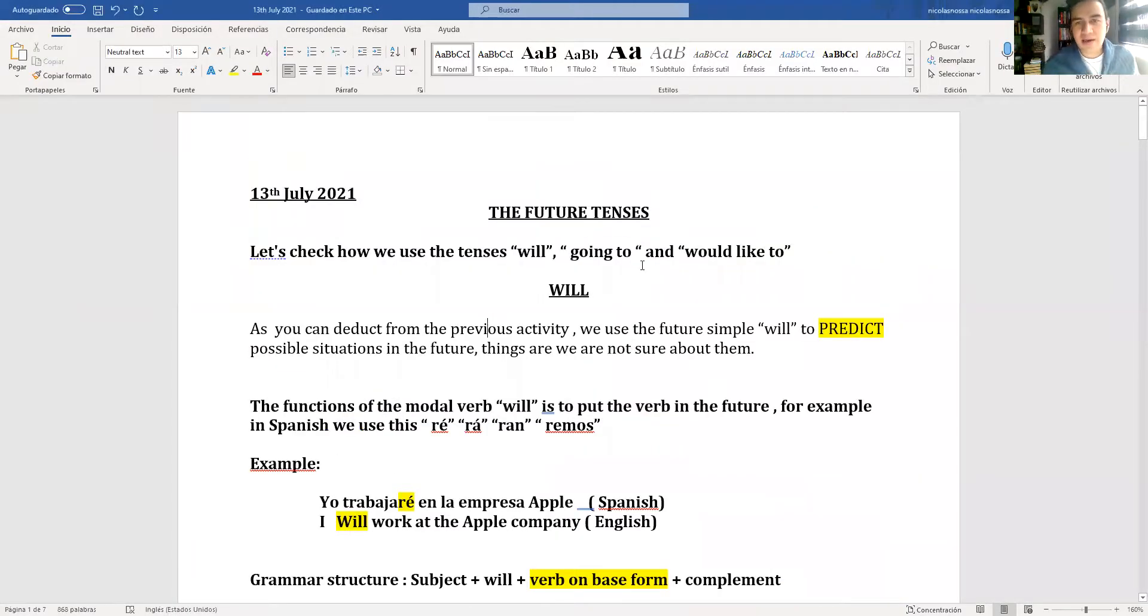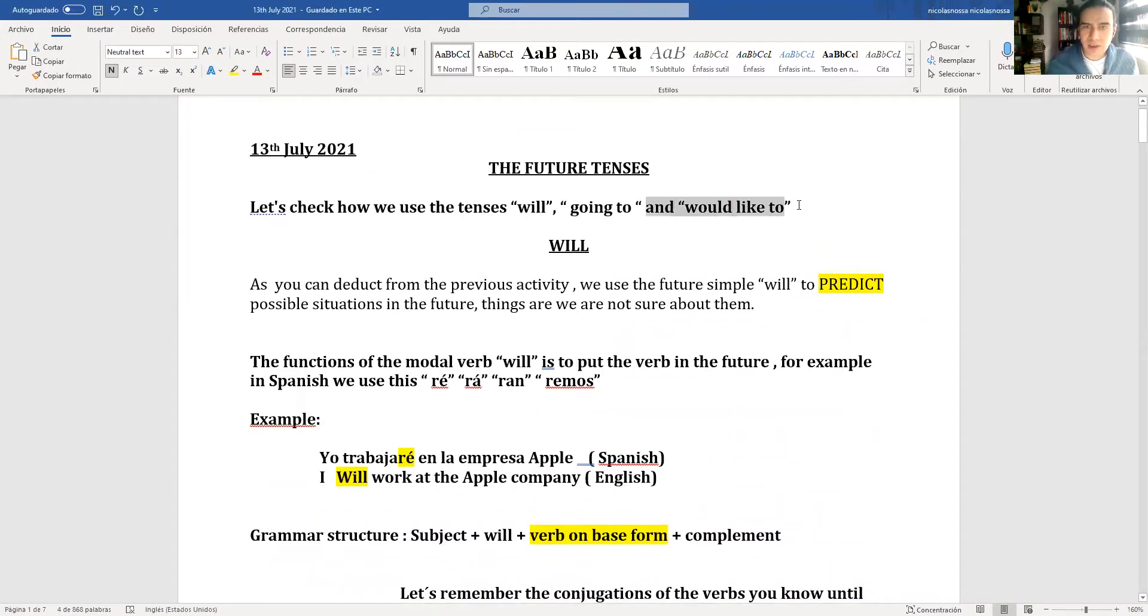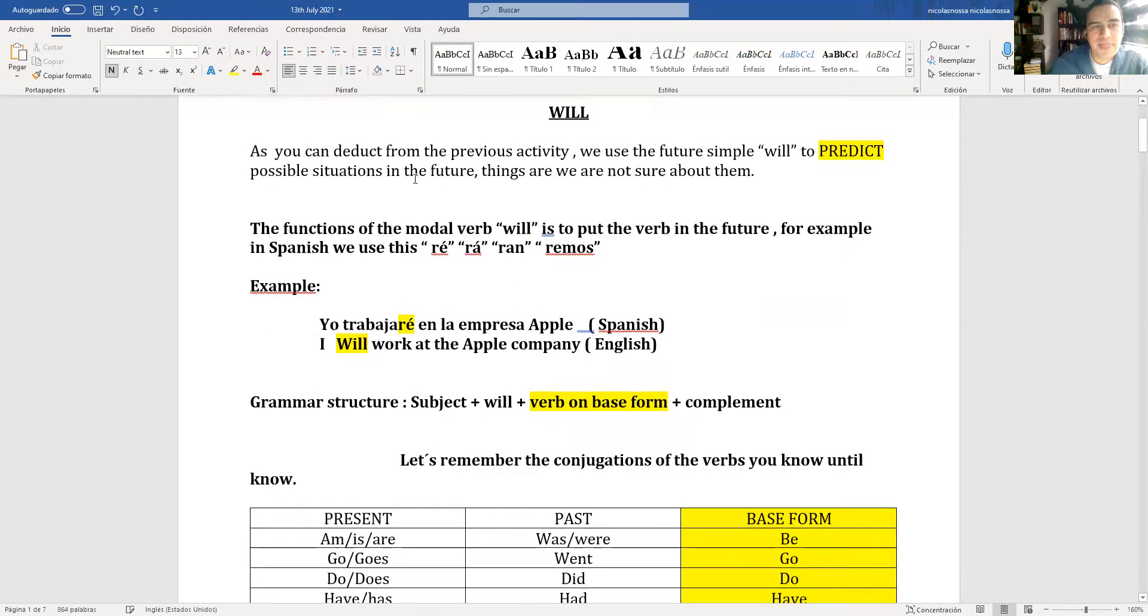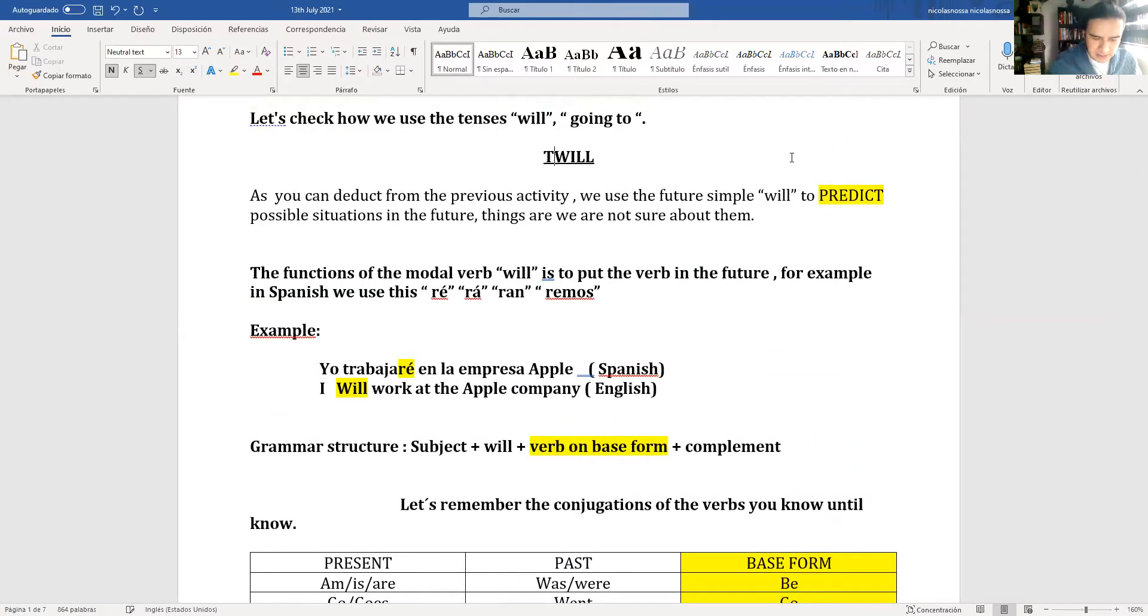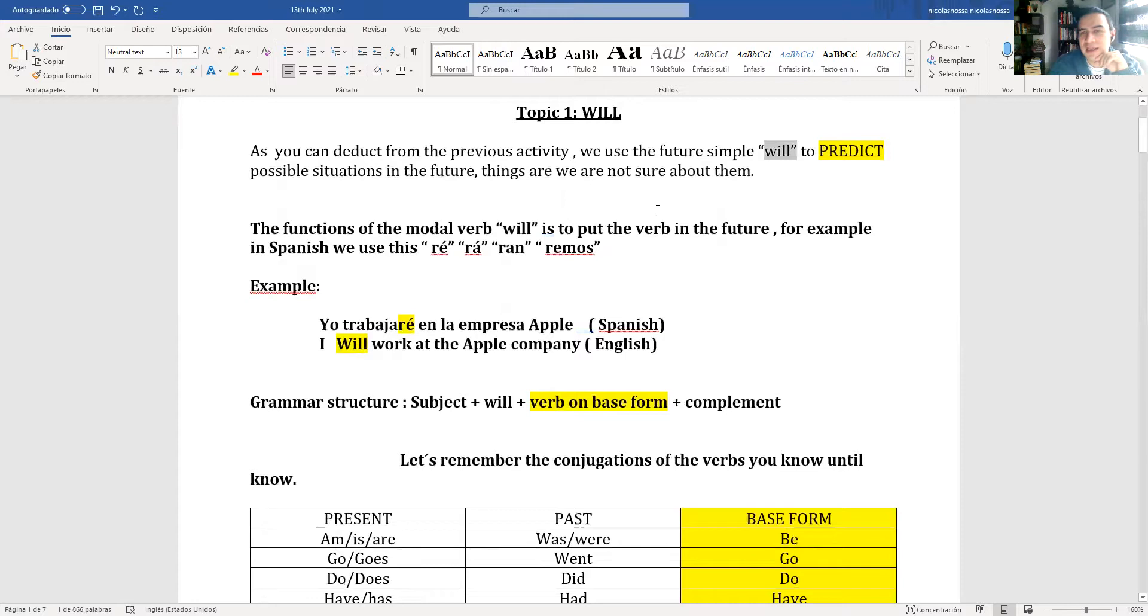Vamos a ver el will and going to. We are going to check those two future tenses. Let's begin with will, topic one. As you can deduct from the previous activity, we use the future simple will to predict possible situations in the future, things that we are not sure about them. That is the function of this future.